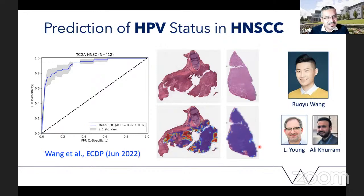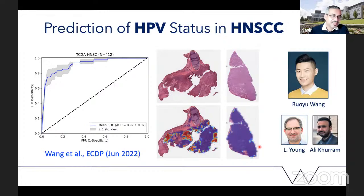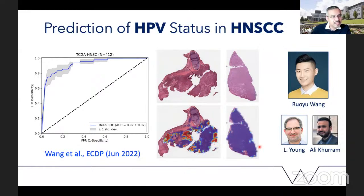Staying with Ali Khurram again — prediction of HPV status. Ali kept saying he could see from H&E images which ones were HPV positive and which weren't, so we started working on this together with Laurence Young from Warwick Medical School. This was led by Ryu Wong, one of our senior PhD students in the TIA Centre. We showed that you could actually predict HPV status with a good degree of accuracy from H&E.